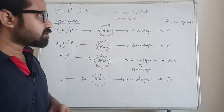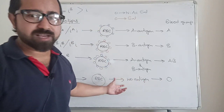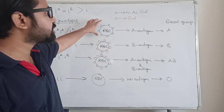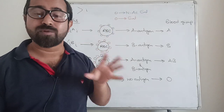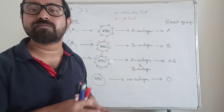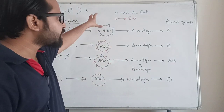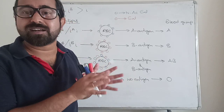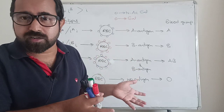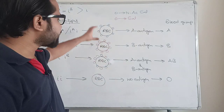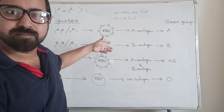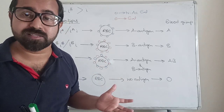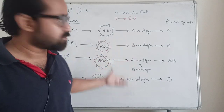Imagine a person with O blood group — he has no antigen on his RBC. Now if you transfuse blood from A blood group type, he is going to experience N-acetylgalactosamine or A antigen for the first time in his life. He will treat it as foreign antigen, start creating antibodies against it, and there will be an agglutination reaction. So A, B, or AB blood groups are not compatible with O blood group. O does not recognize any antigen as self, because it has no antigen on its own RBC.